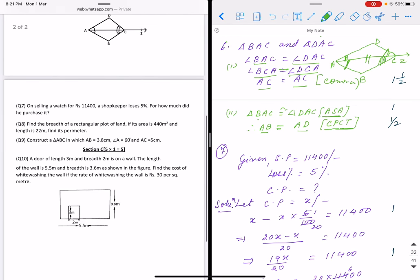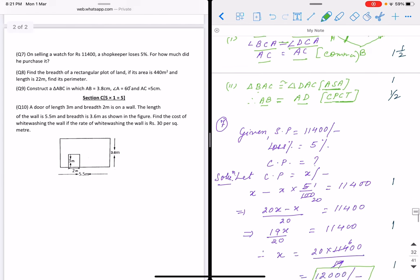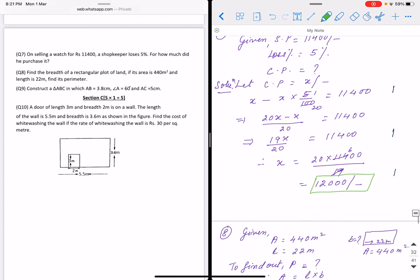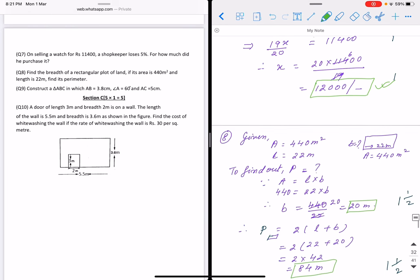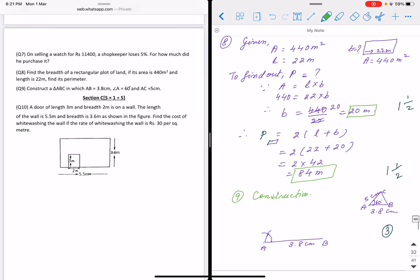Question number 7: SP is given 11,400. What is given? Admitted loss is 5%. CP you have to find out. We suppose that CP is X. You can use the formula also. Alternative methods you can do. Suppose CP is X. So I have written X minus X into 5 by 100 equals 11,400. If you simplify, you are getting 12,000 rupees. If you know formula, you can do by formula method also.